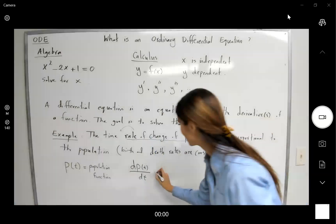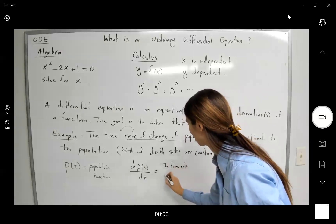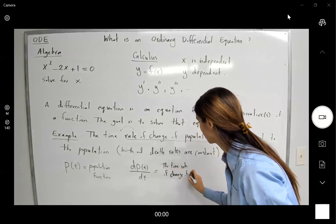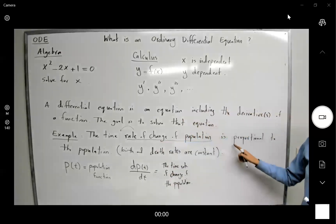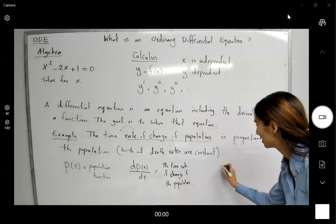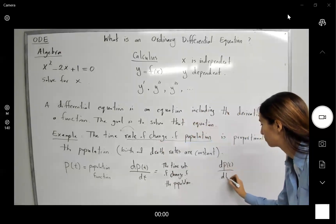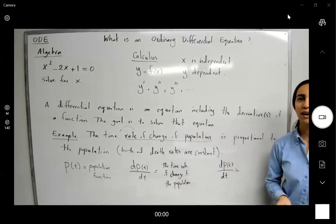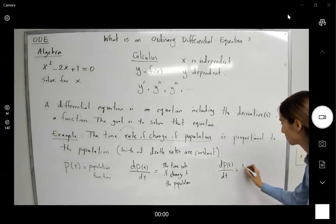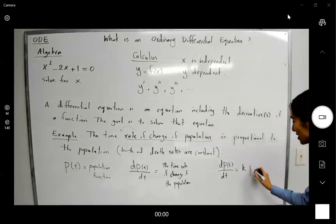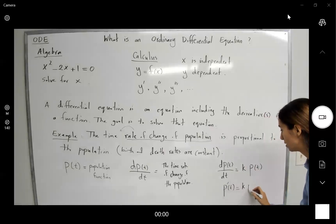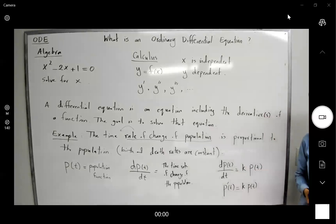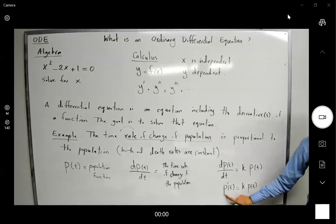So dP/dt is the time rate of change of the population. We know that the time rate of change of the population is proportional to the population, so we need to come up with a constant. This is an example of a differential equation — you have an equation involving the derivative of the function.